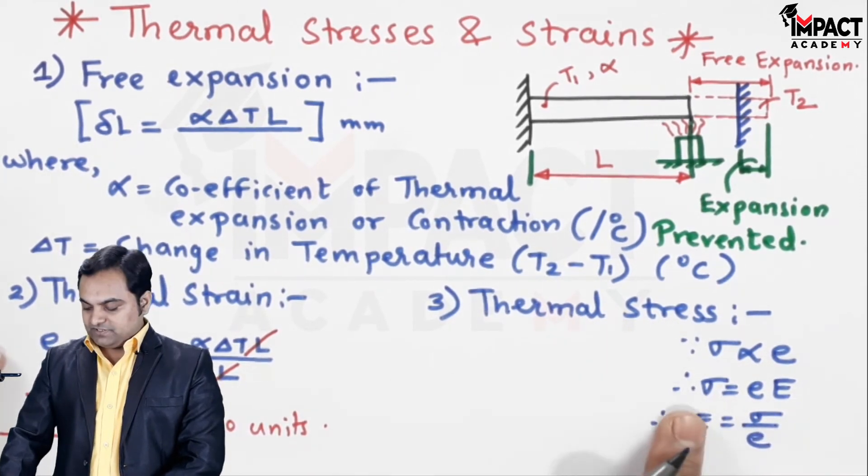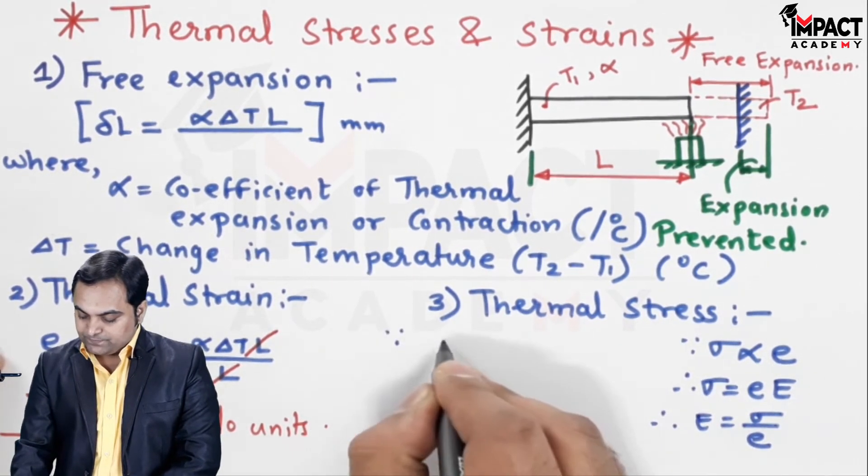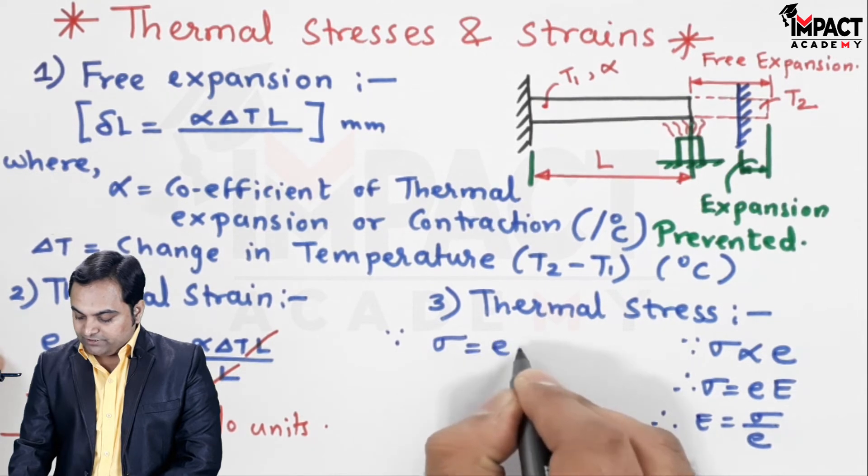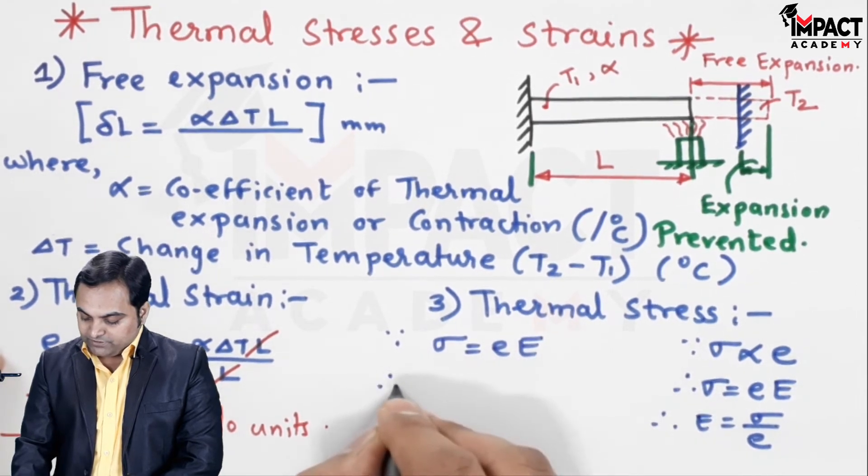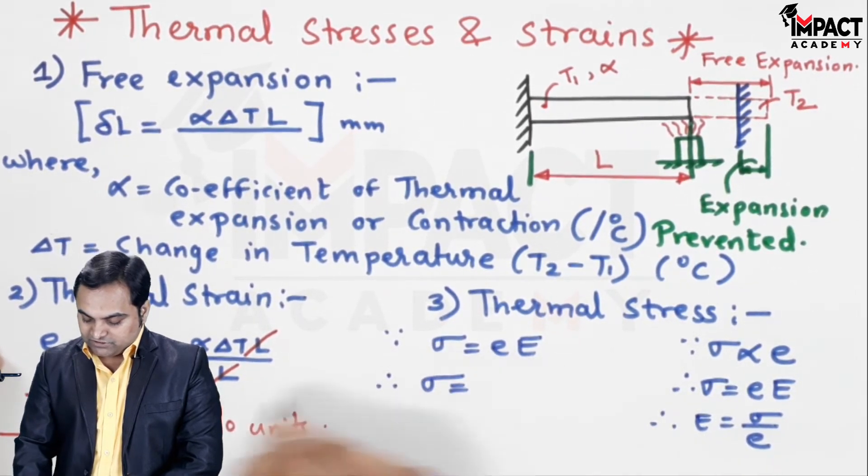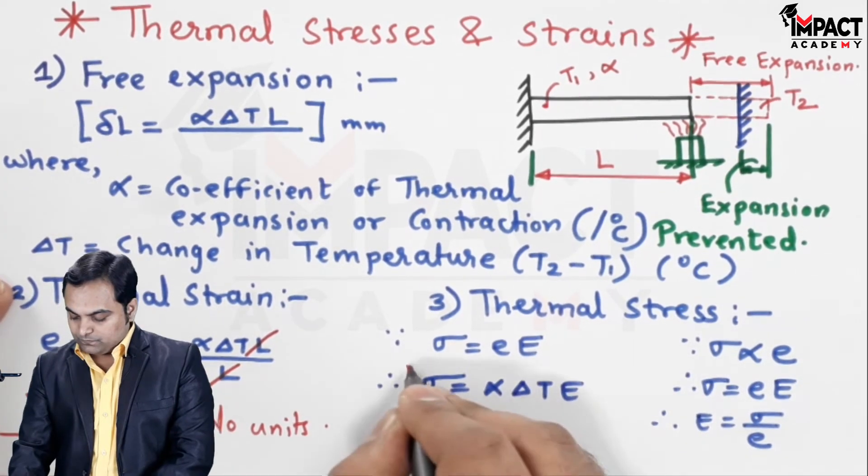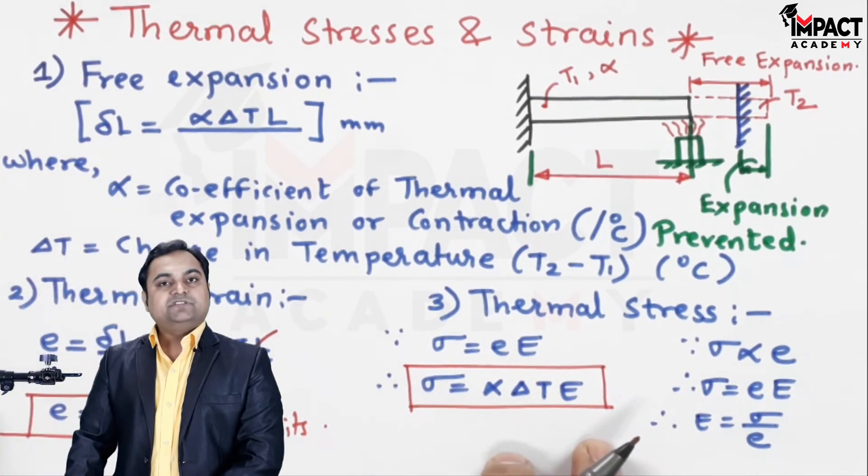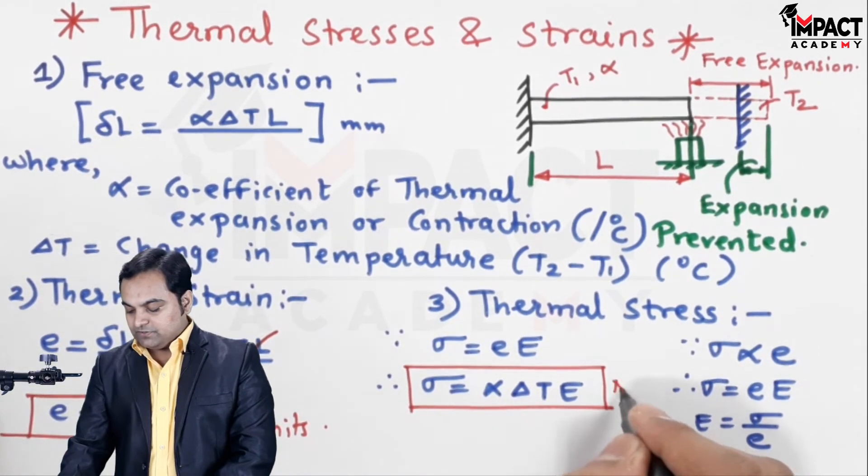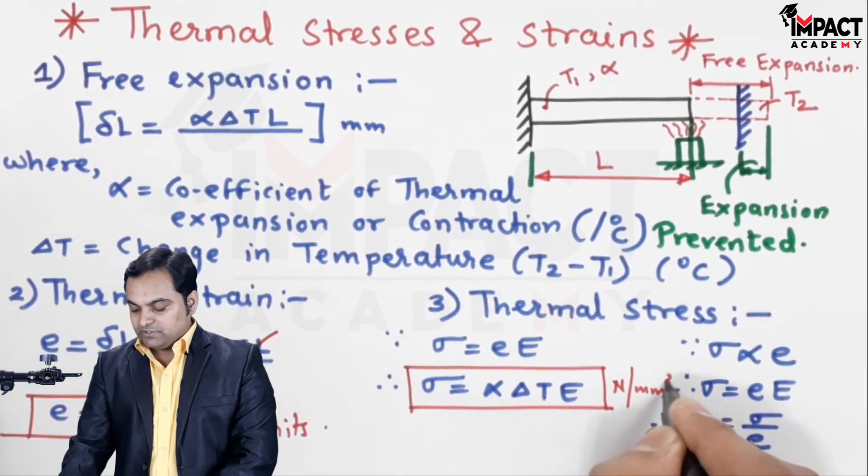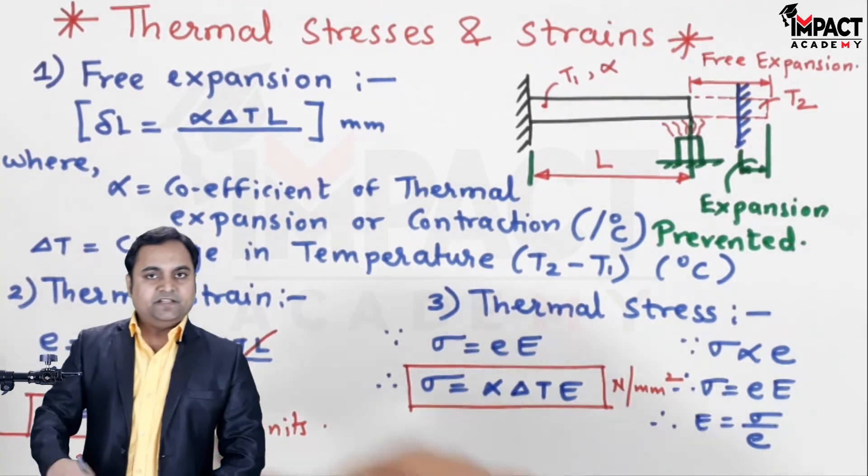So in order to get thermal stress, since stress is equal to strain into Young's modulus, and the thermal strain is alpha into Delta T, this is the formula for thermal stress or temperature stress.